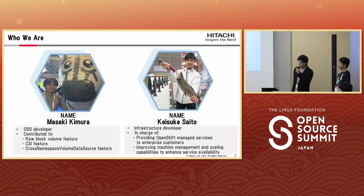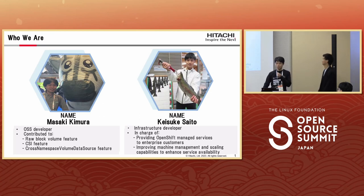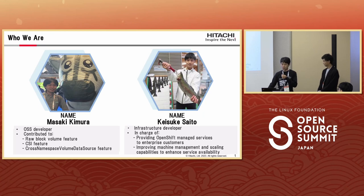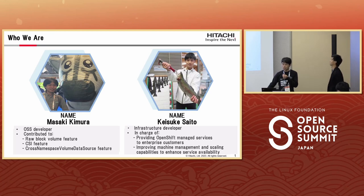Let us introduce ourselves first. My name is Masaki Kimura. I have been contributing to the OSS community as a developer. My areas of concern are Kubernetes, storage, and reliability. I'm one of the main developers of Rook volume and CSI features, and I've designed and implemented a prototype of the cross-namespace volume data source feature, which became alpha this year.